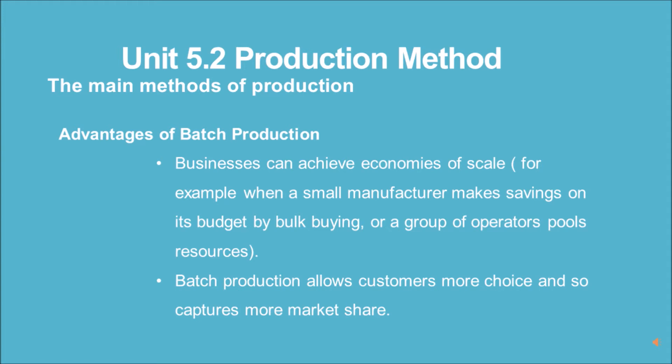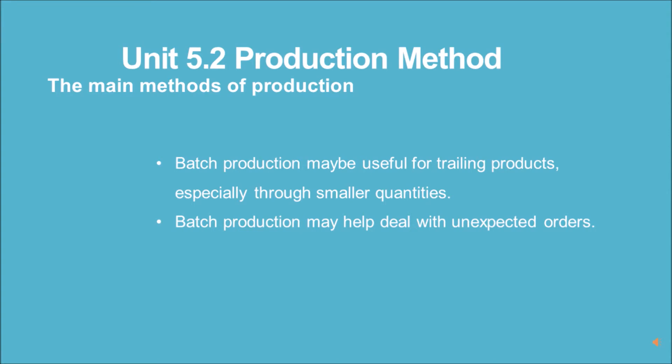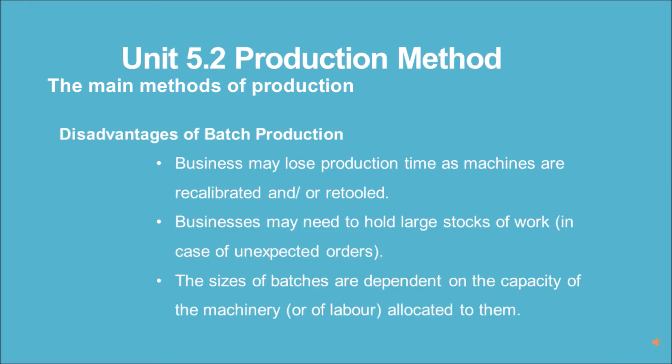Batch production requires careful planning as the components for the products need to be interchangeable. Advantages of batch production: businesses can achieve economies of scale — for example, when a small manufacturer makes savings on its budget by bulk buying or a group of operators pools resources. Batch production allows customers more choice and so captures more market share. It may be useful for trialing products, especially through smaller quantities, and may help deal with unexpected orders.